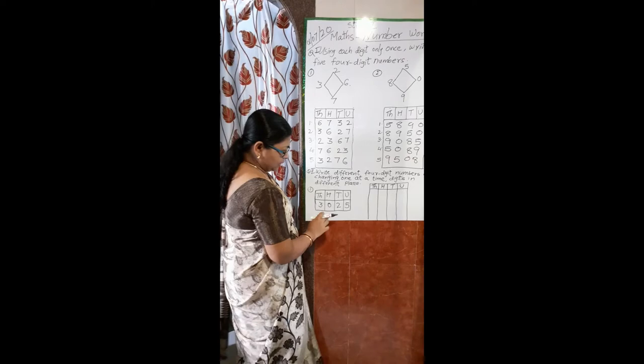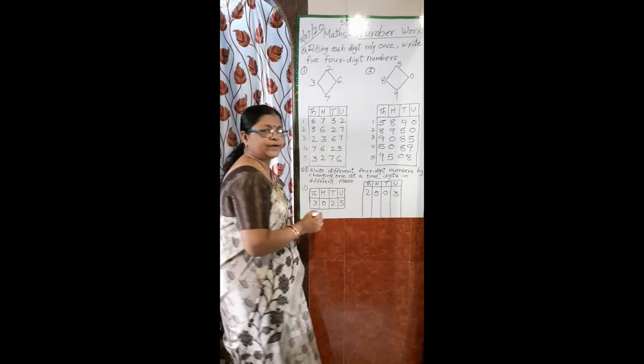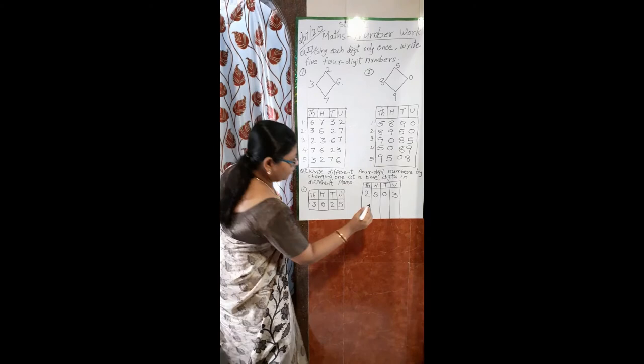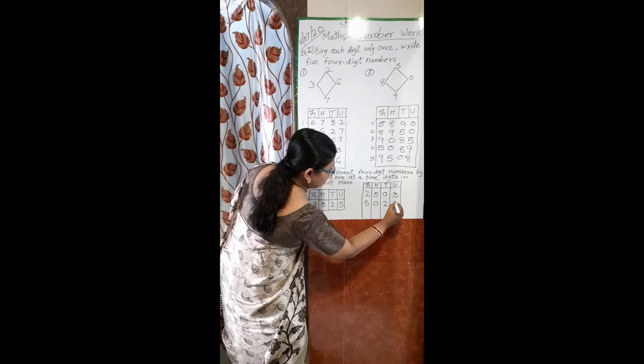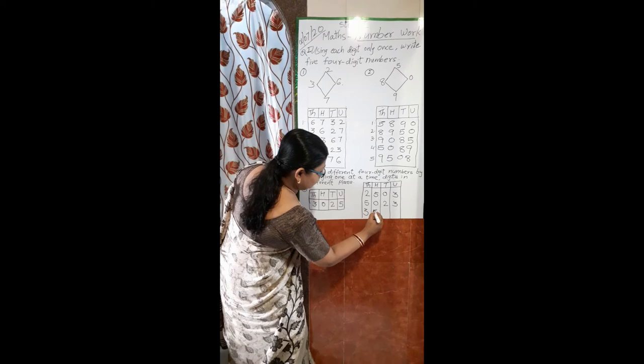This number is 3025 — three thousand and twenty-five. Now let me take 2 in the thousands place, 5 in the hundreds place, 0 in the tens place, and 3 in the units place — you read this as 2503. Then 5 in the thousands place, 0 in the hundreds place, 2 in the tens place, and 3 in the units place — the number is 5023.